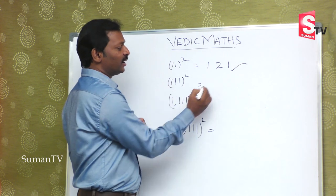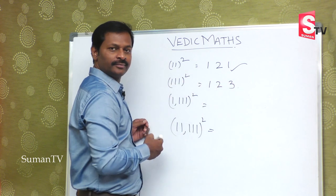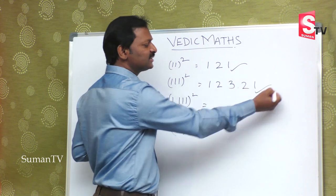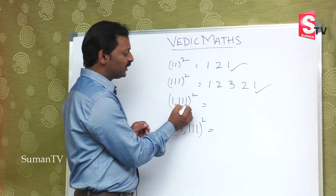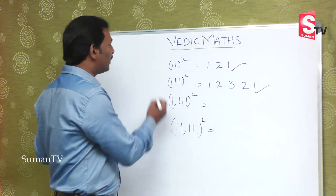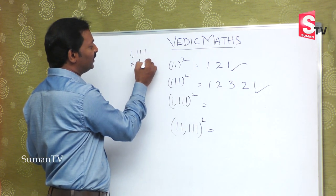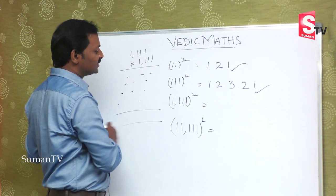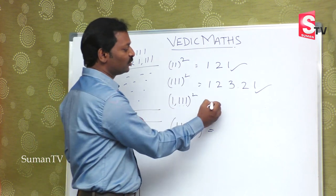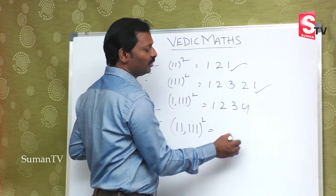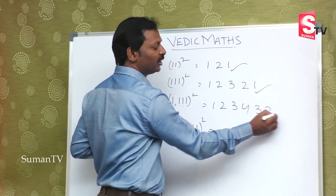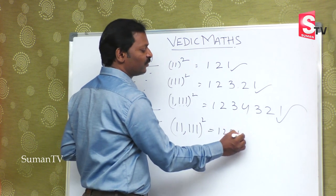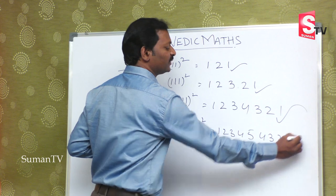For 1111 squared, 4 digits are given. So 1 step, 2 step, 3 step, 4 step and answer — a 5-step answer with 4 digits. The sequence goes: 1, 2, 3, 4, 5, 4, 3, 2, 1. This is the answer.